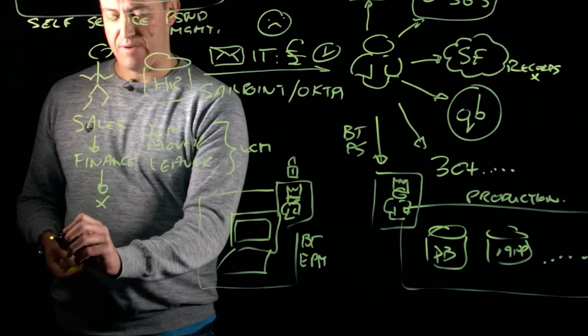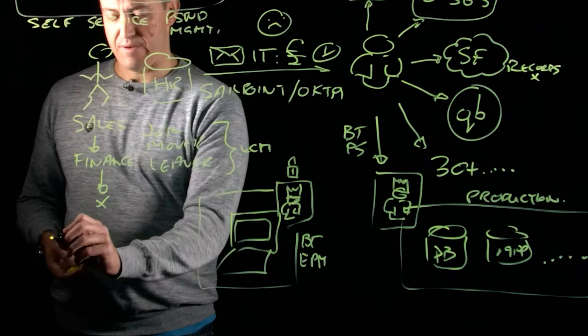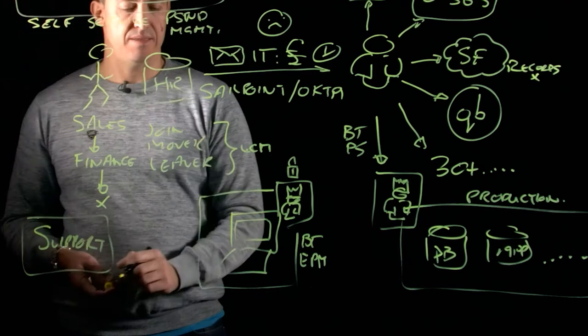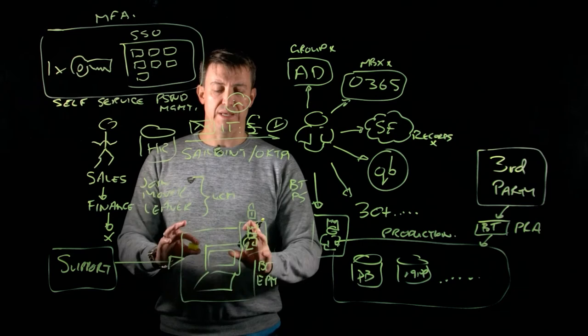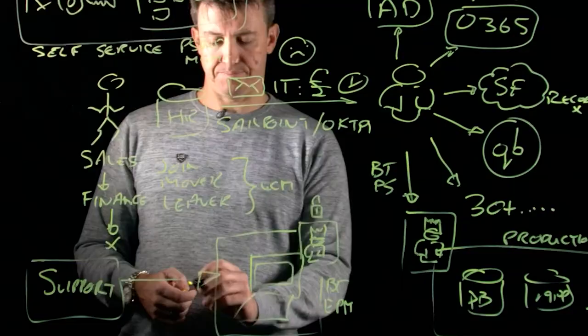And then finally, we might have our support teams down here. And they need access to all of our endpoints to support these endpoints in our environment. These endpoints might be distributed globally, so they could be all over the world. And we want to be able to provide support with an easy way to access these endpoints to be able to help our users whenever they encounter any difficulties.